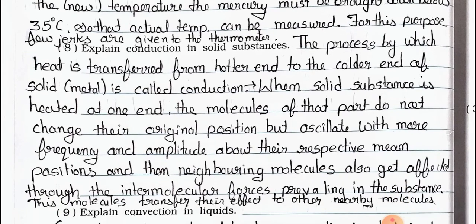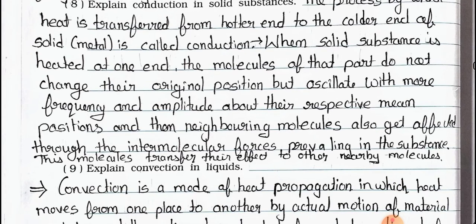Question number 8: Explain conduction in solid substances. Answer: The process by which heat is transferred from the hotter end to the colder end of a solid (metal) is called conduction. When a solid substance is heated at one end, the molecules of that part do not change their original position but oscillate with more frequency and amplitude above their respective mean positions, and the neighboring molecules also get affected through intermolecular forces. These molecules transfer their heat effect to other nearby molecules.